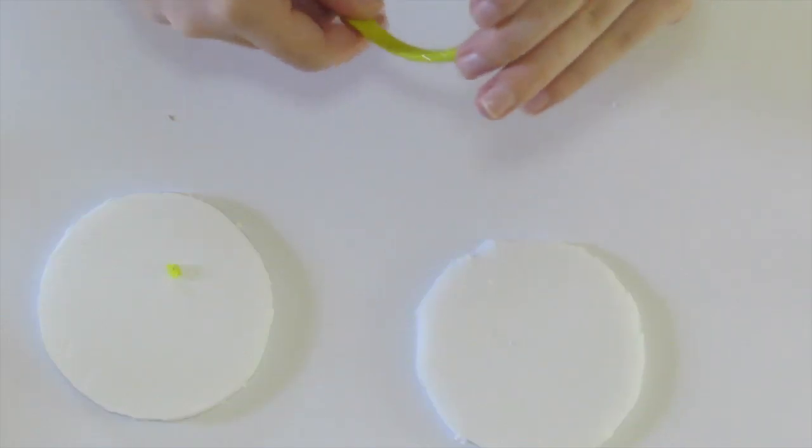Once you're done cutting, you'll just be able to pop them out just like this. And once you have both done, you can go ahead and take your headband and remove any sort of decoration that it may have on it so that it's plain.